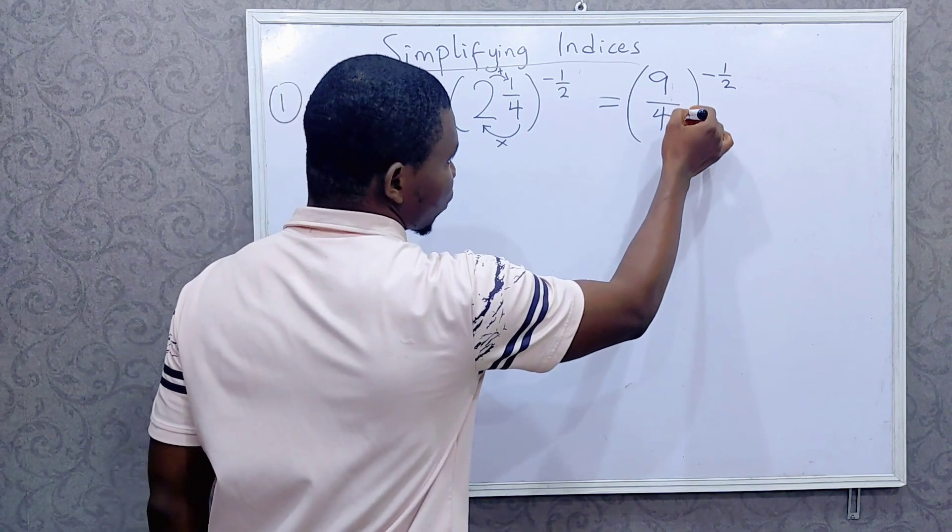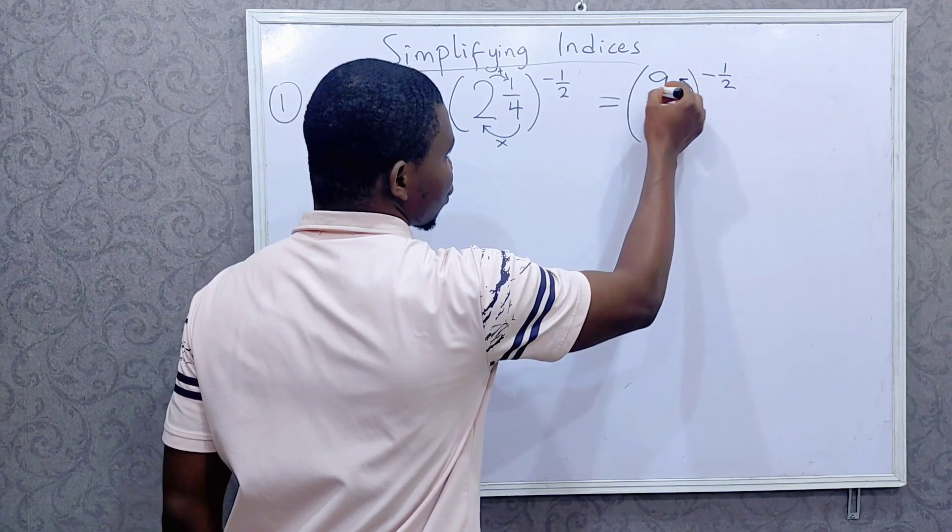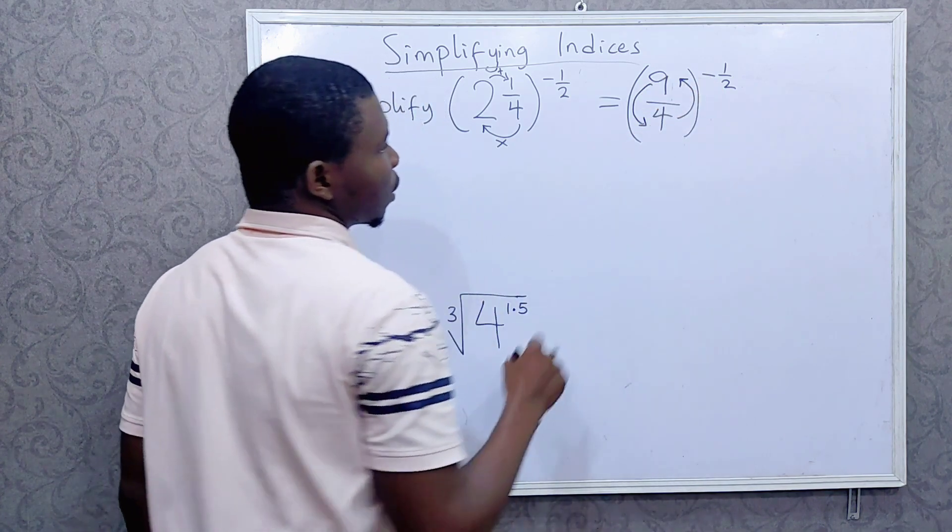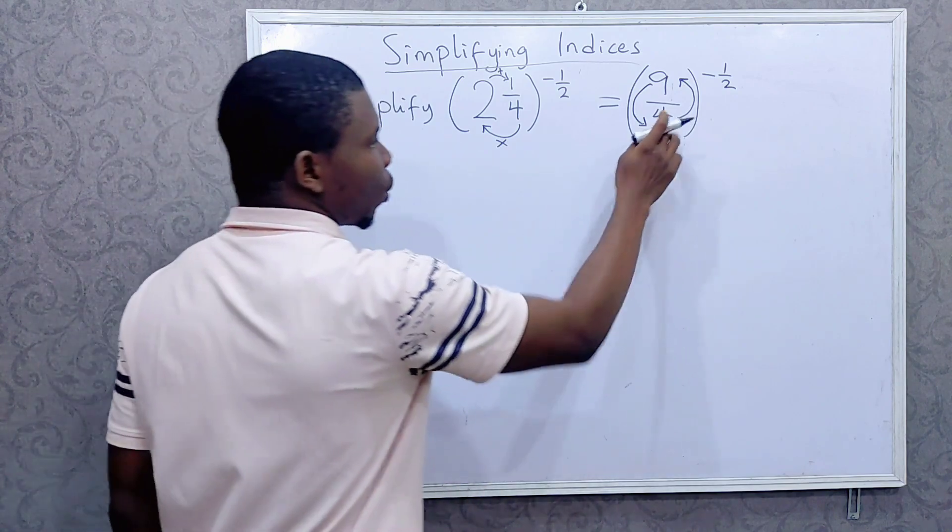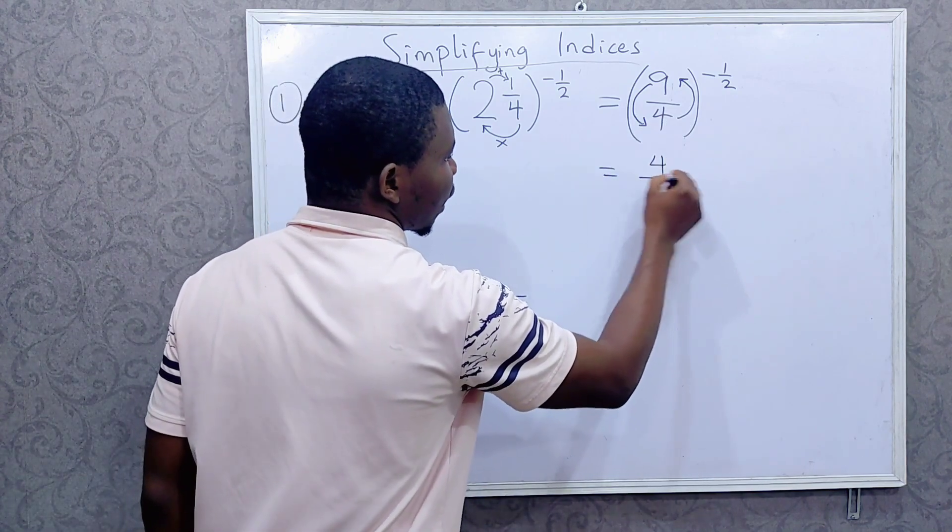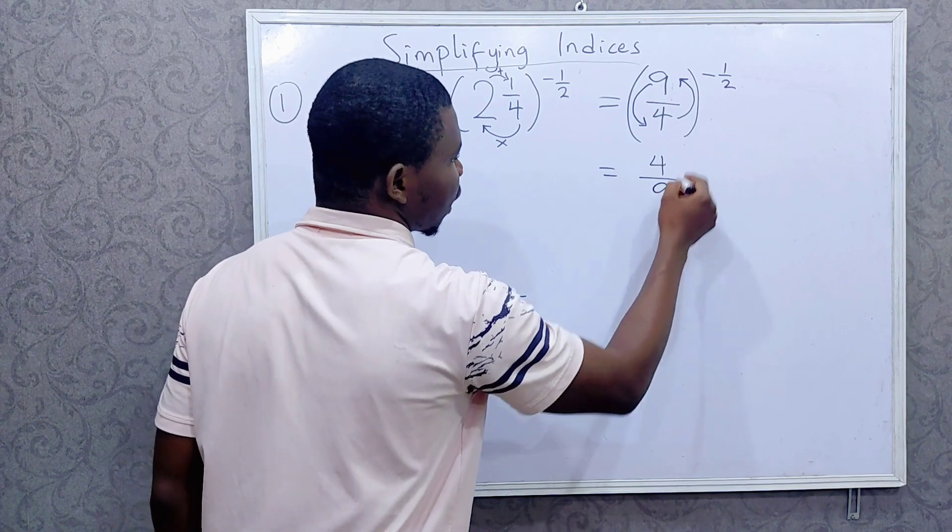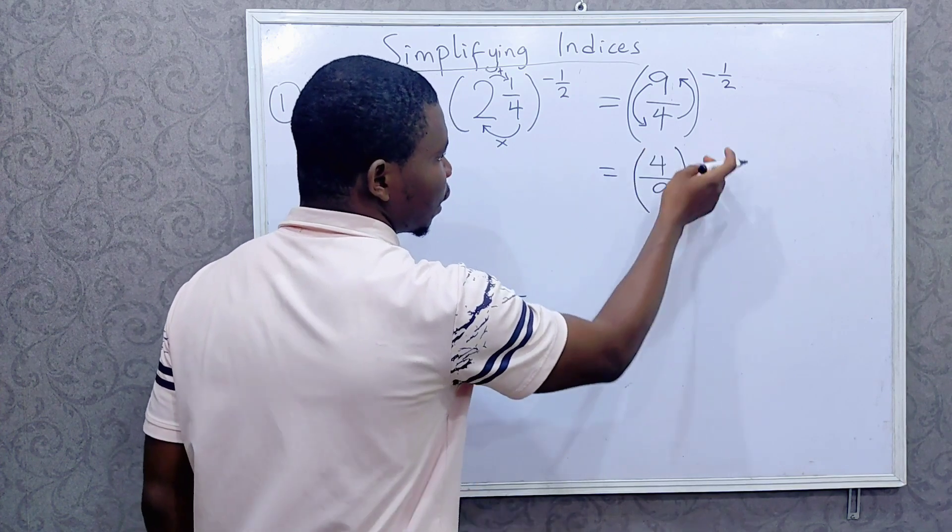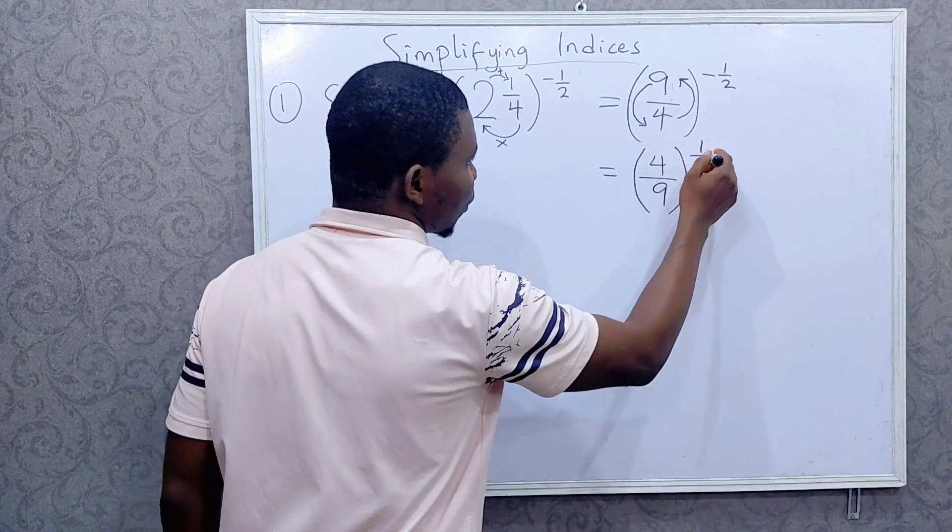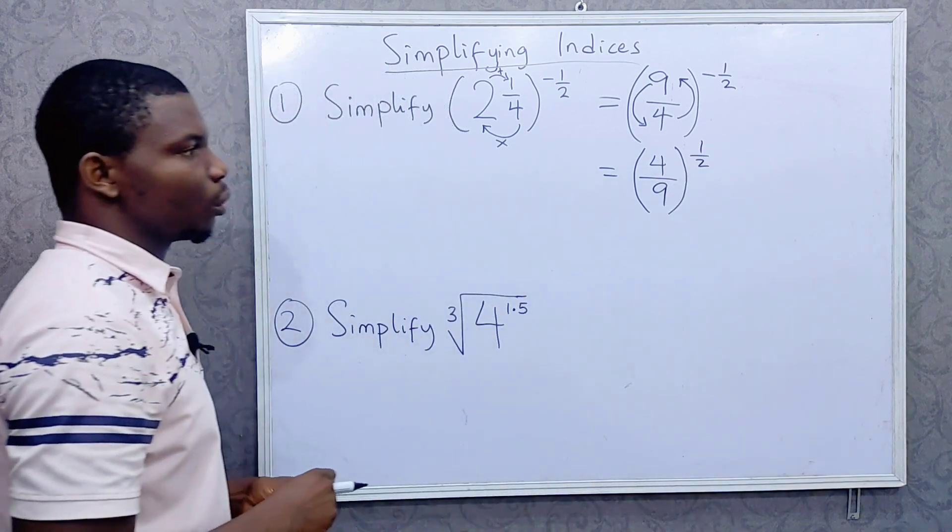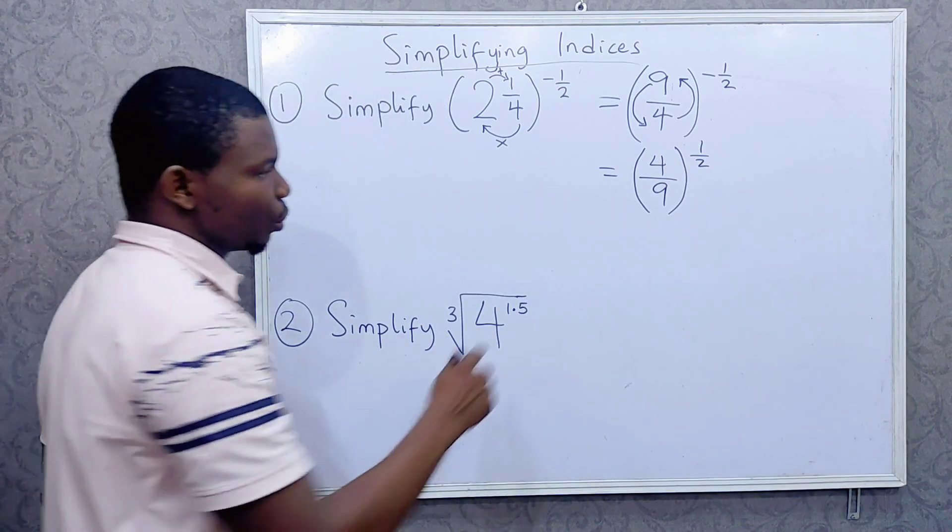And to do that, we have to invert the base of these indices. So the 4 will go up and the 9 will come down. So we can safely remove the negative sign now. So that this will be 4 over 9 raised to power 1 over 2.